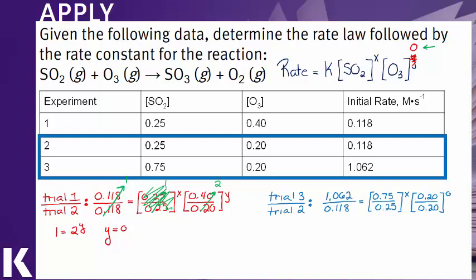Here we have 1.062 over 0.118. This is equal to nine. 0.75 over 0.25 is three. And again, since it is zero order for ozone, this will essentially just drop out of the equation.